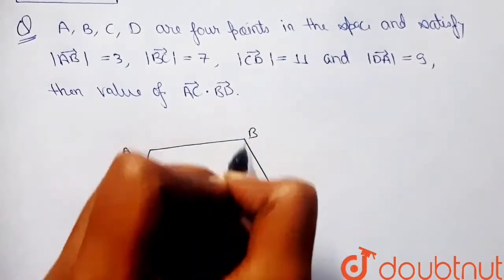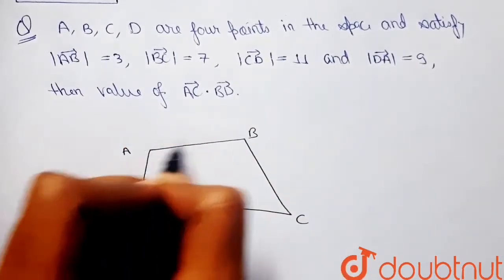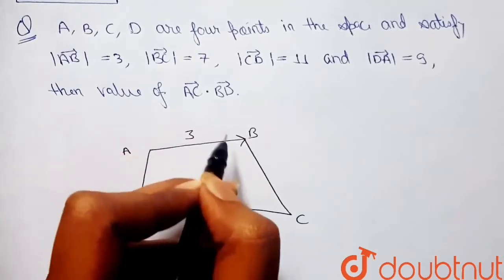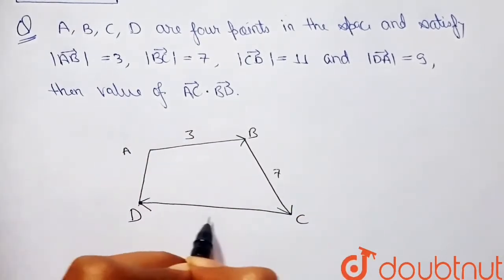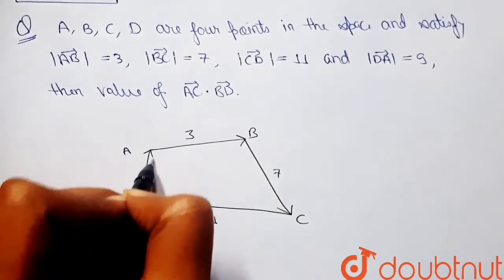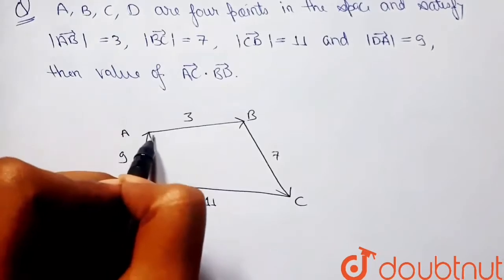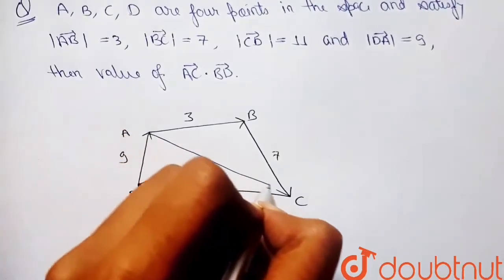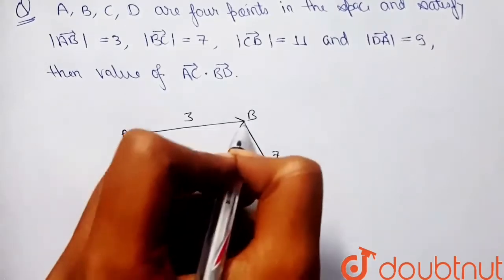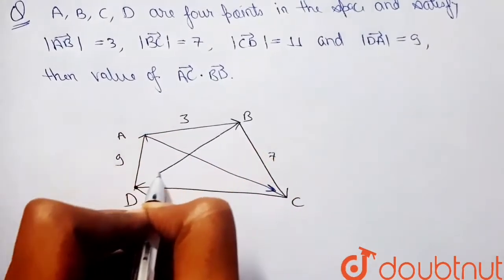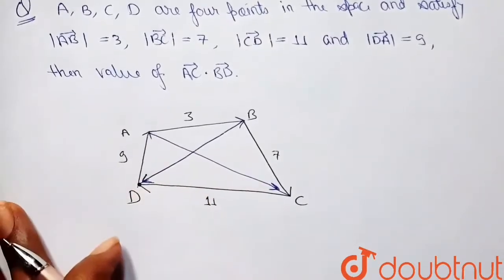So let's start. Let me draw the diagram first. In this question we have a quadrilateral ABCD. We have vector AB as 3, vector BC as 7, vector CD as 11, and vector DA as 9. We have to find out vector AC — that means this vector — dot vector BD, that means this vector. The dot product of these two vectors.